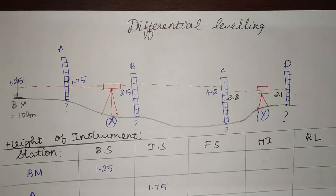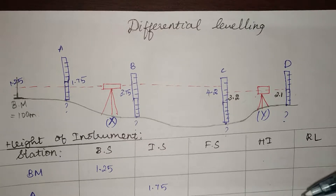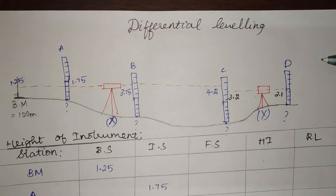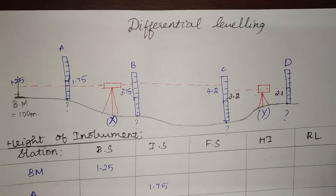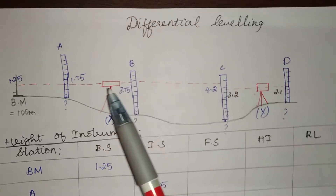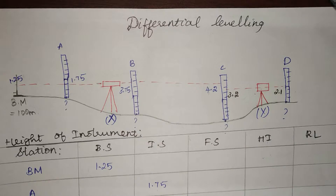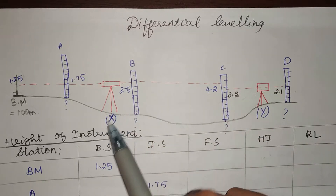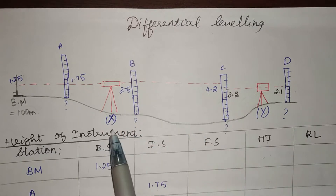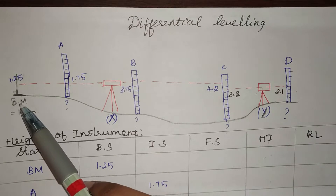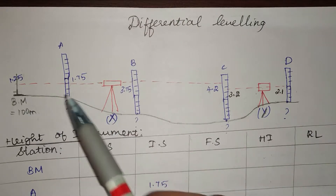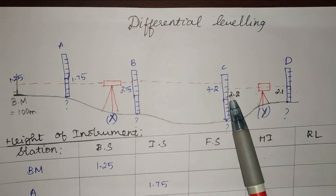In this video we are going to see differential leveling. There are two types: height of instrument method and rise and fall method. There is also inverted staff reading — we'll look at all three. I have a problem here with points A, B, C, and D. I need to find the reduced level (RL) of all four points. The level is set up at two stations, X and Y, and we also have a benchmark. The leveling staff is placed at points A, B, C, and D and the corresponding staff readings are recorded.